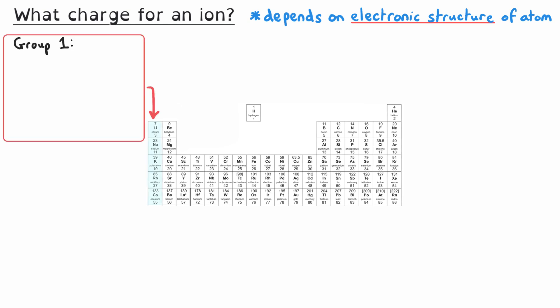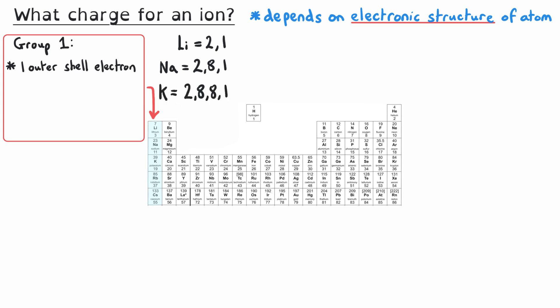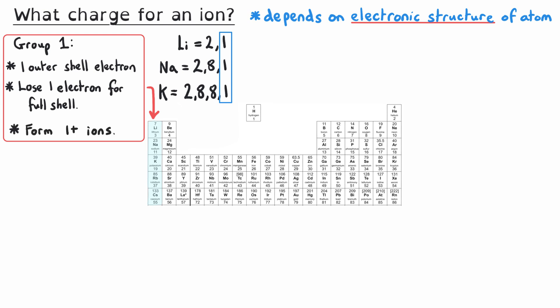The group 1 elements on the far left-hand side all have one electron in their outer shell, as shown by their electronic structures: lithium is 2,1; sodium is 2,8,1; potassium is 2,8,8,1. They all have one electron in their outer shell, which they lose in order to fill it. This means they become 1+ ions.